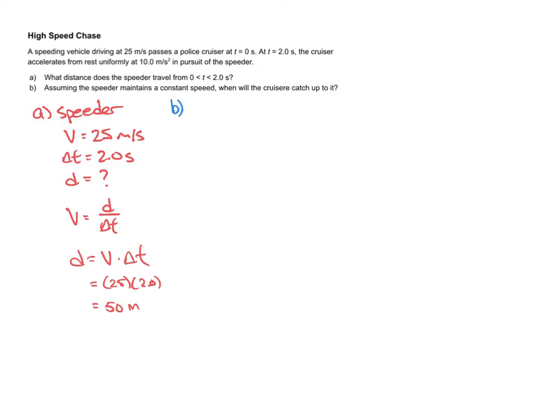Well now part B, the cruiser is going to give chase now. So for the cruiser, we'll have the acceleration of 10.0 meters per second squared. Starting from rest, so v1 equals zero. And the question is when will the cruiser catch up to the speeder. It's kind of a classic question here, and there's various ways to do it. The way I'm going to do it is try to set up an expression for the position of the speeder and set up another expression for the position of the cruiser.